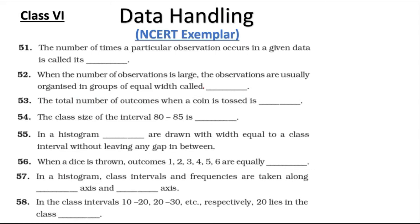Question 51: The number of times a particular observation occurs in a given data is called its frequency. Question 52: When the number of observations is large, the observations are usually grouped in groups of equal width called class intervals.